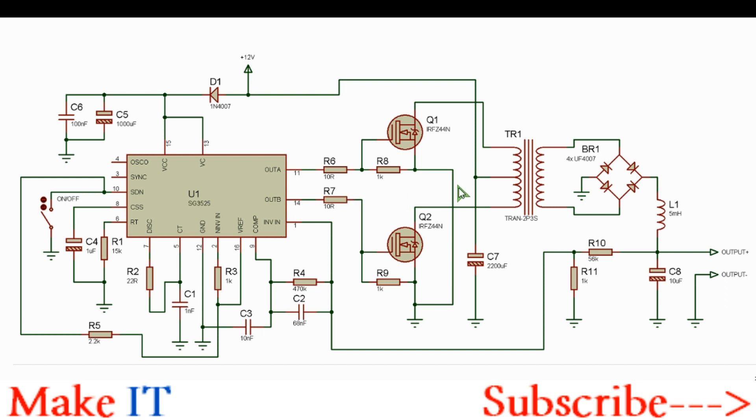Instead you can use a trimmer pot for R11 to obtain an output which can be adjusted for the desired output voltage.